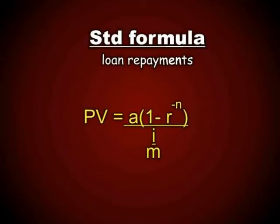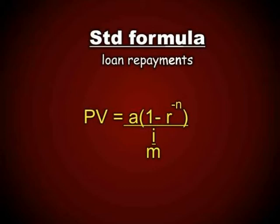Let us take a look at the standard formula when working with loans. Remember, with a loan it is the exact reverse of an annuity. Instead of future value, we have present value. It equals A × (1 − r^(−n)) / (i/m), where A is the repayment amount and M is the number of compounds per year. So it's pretty similar with slight changes from the annuity standard formula.